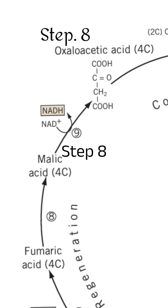Step 8: Oxaloacetate formation. In the eighth and final step, malate is converted to oxaloacetate in the presence of malate dehydrogenase enzyme. Here, the third NADH molecule in the cycle is produced.